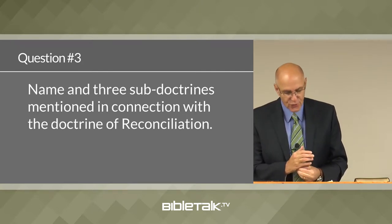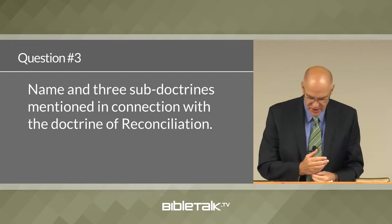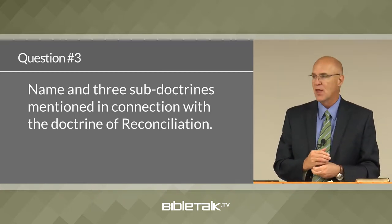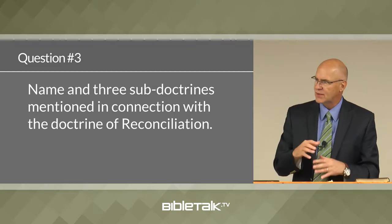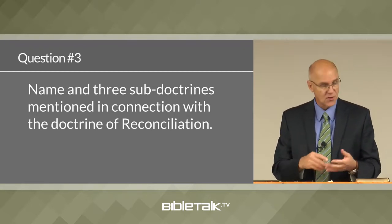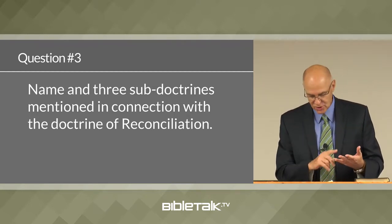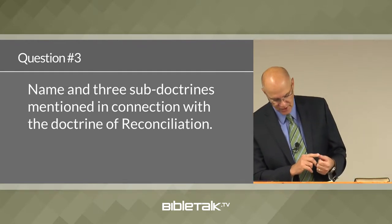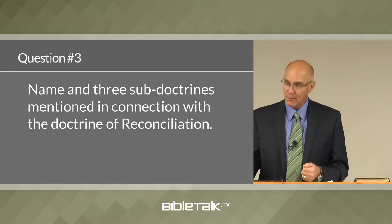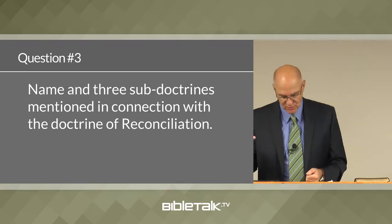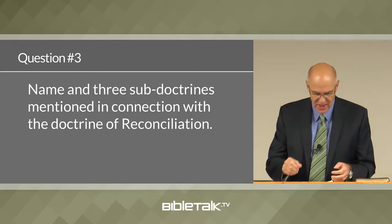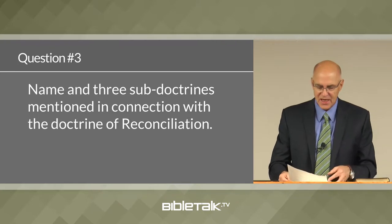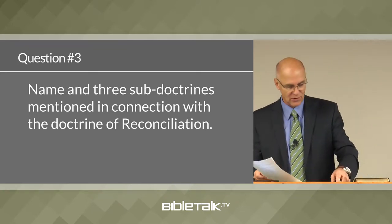Name any three sub-doctrines mentioned in connection with the major doctrines. There are ten sub-doctrines: election, predestination, atonement, redemption, regeneration, adoption, justification, perfection, sanctification, and salvation. Those are the ten sub-doctrines we'll be going through.